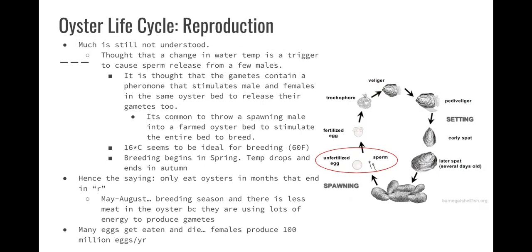Much is still not understood about oyster reproduction. A change in water temperature typically triggers the release of sperm from a few males, and the gametes contain a pheromone that might stimulate other males and females in the same oyster bed to release their gametes too. In an oyster farm, you really only need one male releasing sperm to set it off for everything else — kind of like a domino effect. A spawning male will be put into an oyster bed to stimulate the rest of them.